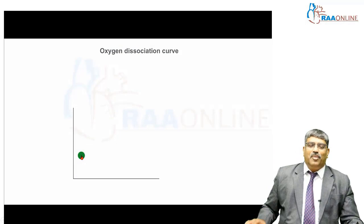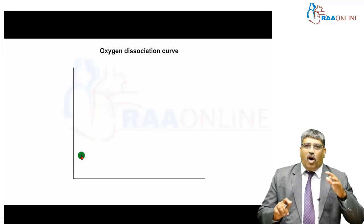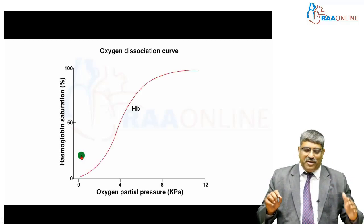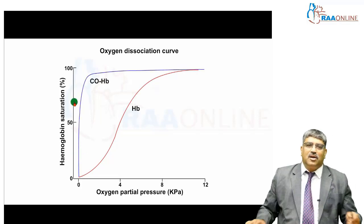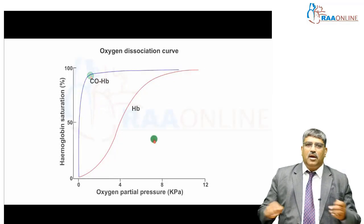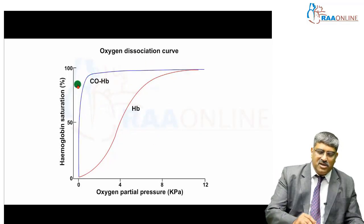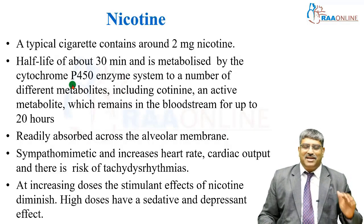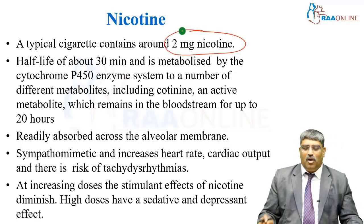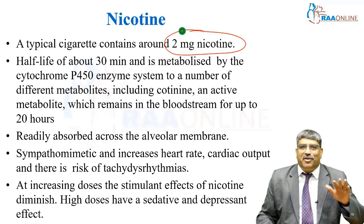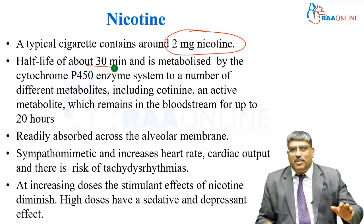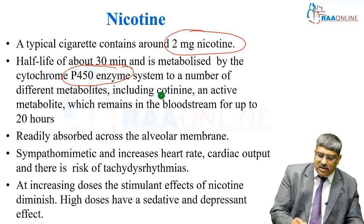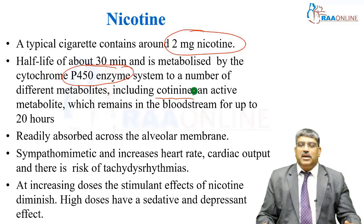Why are we worried about carboxyhemoglobin? The normal sigmoid-shaped oxyhemoglobin dissociation curve will be shifted to the left side. You can see the carboxyhemoglobin shifted to the left, meaning oxygen delivery to the tissue is affected. Coming to nicotine — a typical cigarette contains about 2 milligrams of nicotine. The half-life of nicotine is about 30 minutes and it is metabolized by cytochrome P450 to various compounds, the most important being cotinine, which remains in the bloodstream for longer.